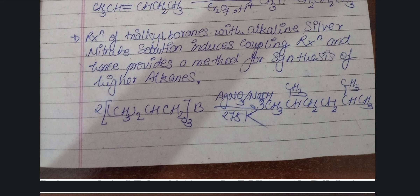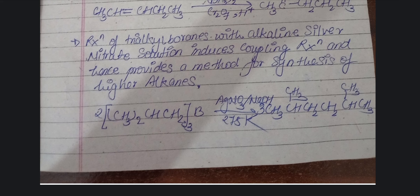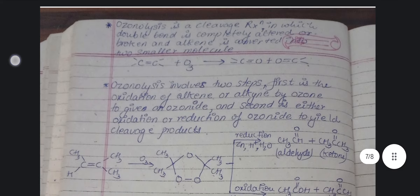So these are all the reactions of organoborane. To summarize: reacting with H₂O₂ gives alcohol; reacting with CWH gives alkane; reacting with chromic acid gives carbonyl compound; and reacting with silver nitrate solution also gives alkane. Let's move on.